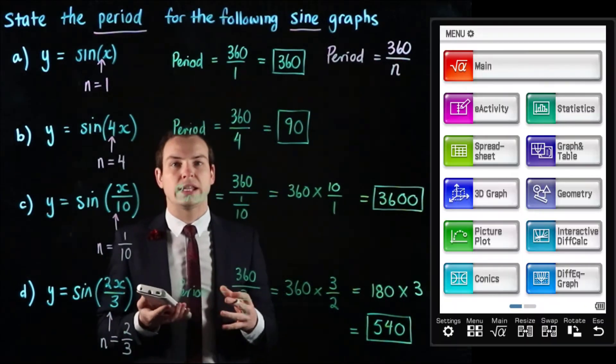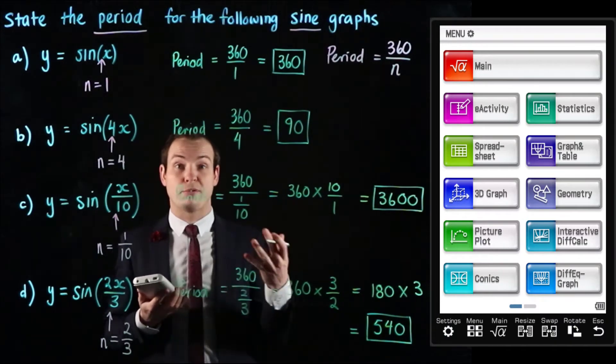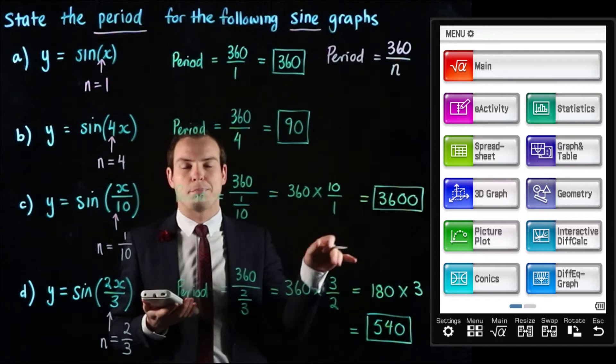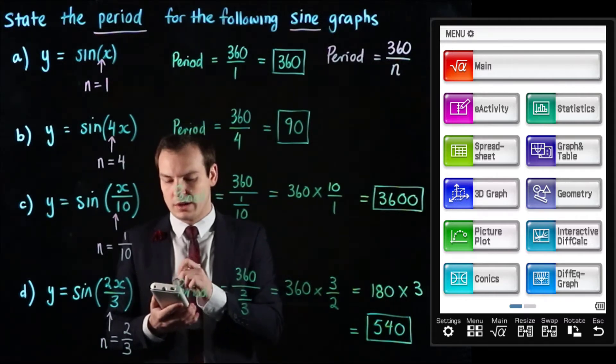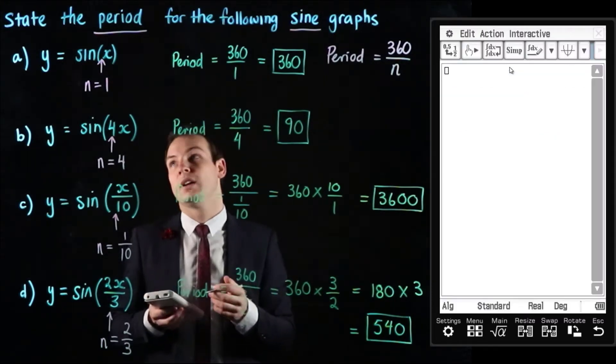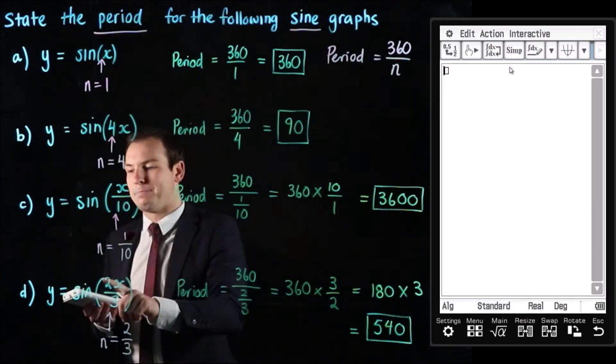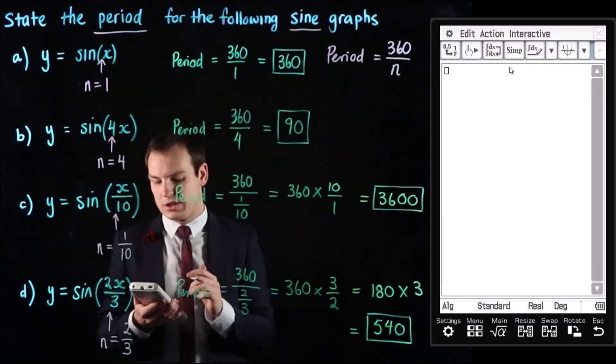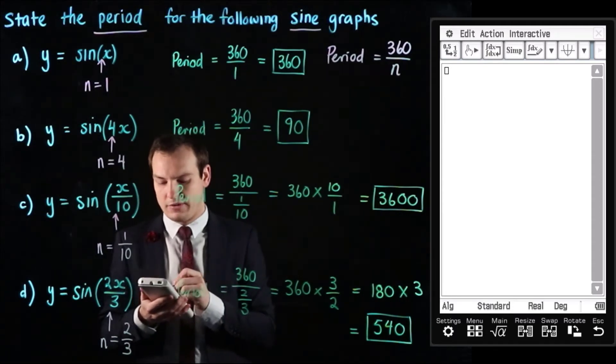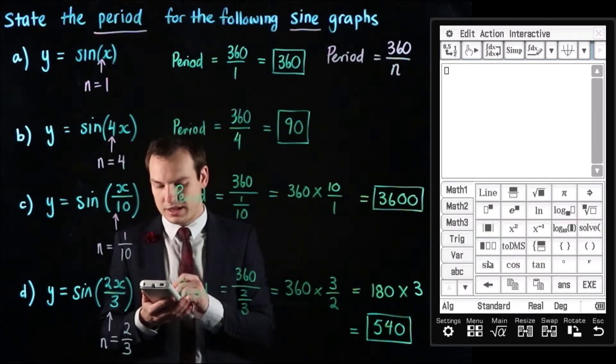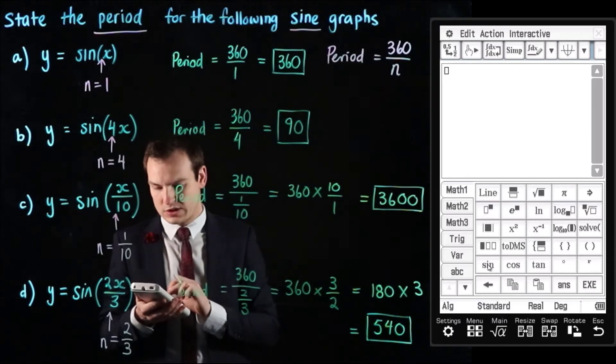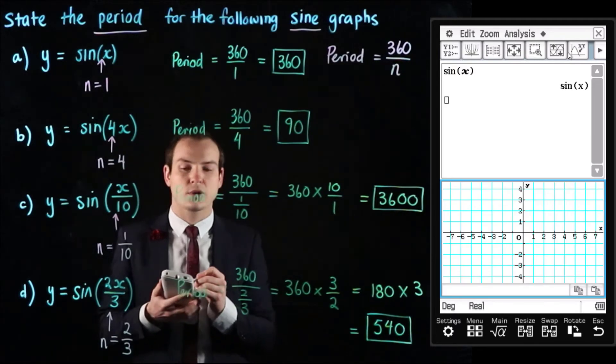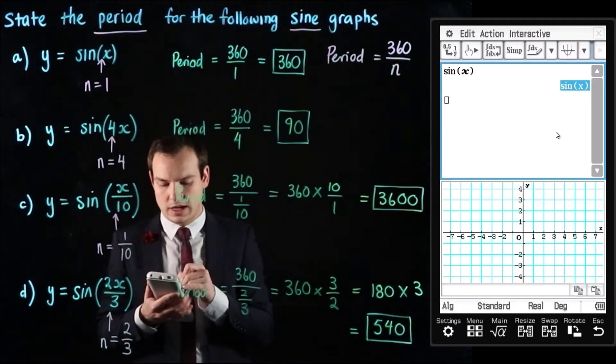So up next on the calculator what we're going to do is we're just going to graph a couple of these and for any that I don't graph I'll put the graph screens up anyway at the end for you to look at. So we're going to start by going into the main menu and I'm going to do part a and part d for this particular question. So for part a we're just going to start with the graph of sine of x. So hitting keyboard we can bring up this menu which allows us to type in sine of x and then we can hit the graph button to bring up the graph screen and we're going to drag sine of x in here.